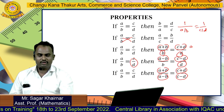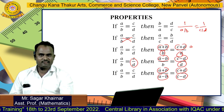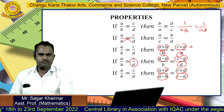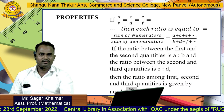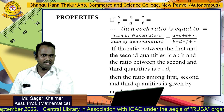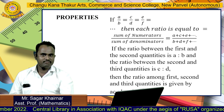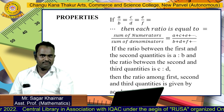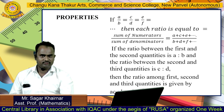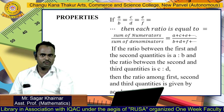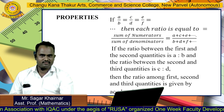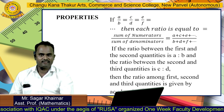These are some properties which are very useful while solving examples. Another property: if A by B equals C by D equals E by F, then each ratio is equal to the sum of numerators divided by the sum of denominators.